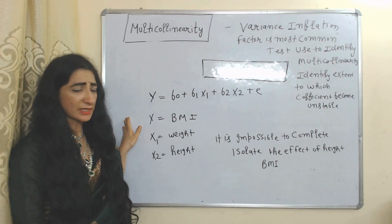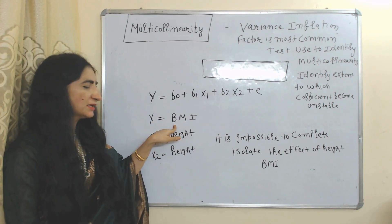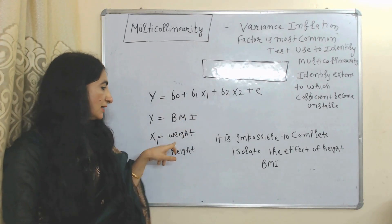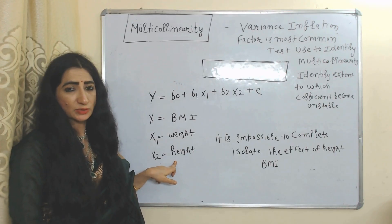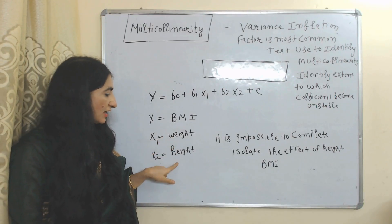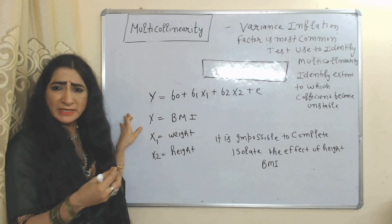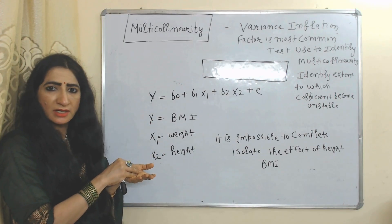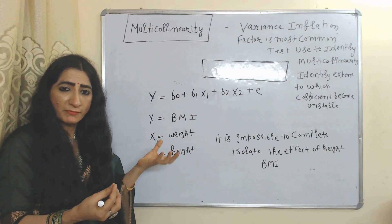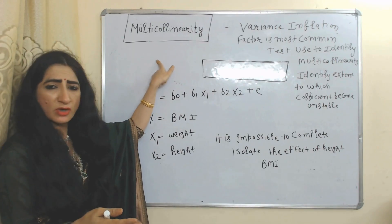Let's understand multicollinearity with one more example. Here, the dependent variable (y) is body mass index (BMI), and x1 and x2 are independent variables — x1 is weight and x2 is height. Our BMI depends on weight and height, but weight and height are highly correlated with each other. That is why it is impossible to isolate the effect of height on BMI, or the effect of weight on BMI. Obviously, this is a problem generated by multicollinearity.